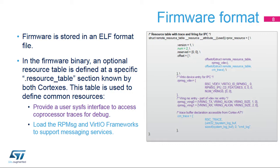The Cortex-M4 firmware is stored in ELF format to be loaded by the remote PROC framework from uBoot or Linux. In addition to the code and data sections, a specific section can be defined to support features related to the coprocessor management. This section consists of a resource table structure, which is parsed by the remote PROC Linux framework during the firmware load phase. The first feature declared in this table is the remote processor trace buffer that offers the possibility to output the Cortex-M4 logs to a ring buffer. This buffer can be monitored on the Cortex-A7 side.